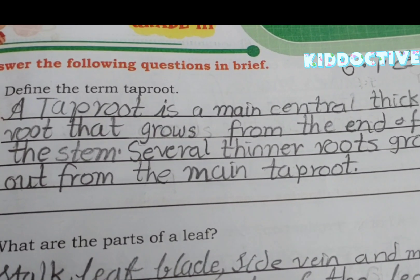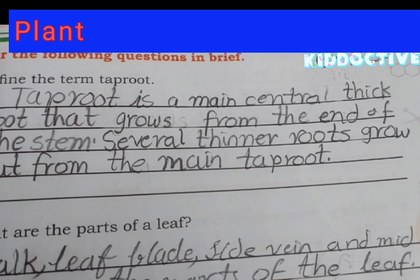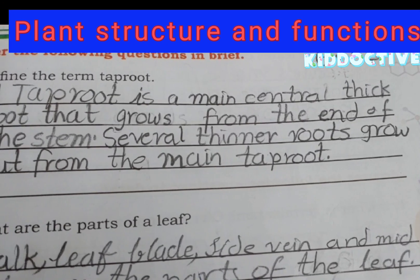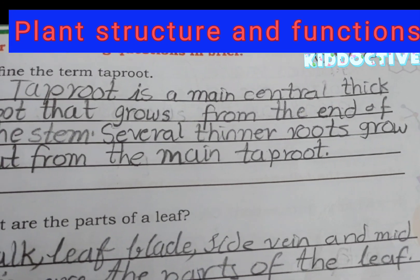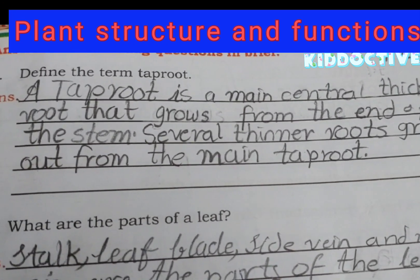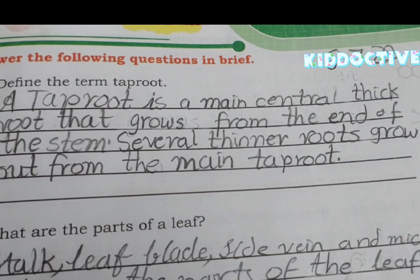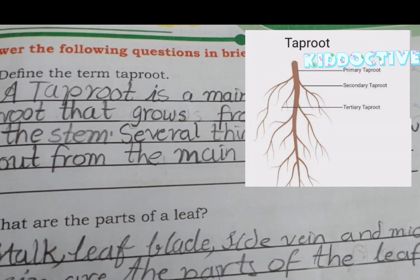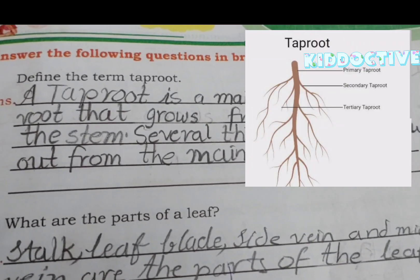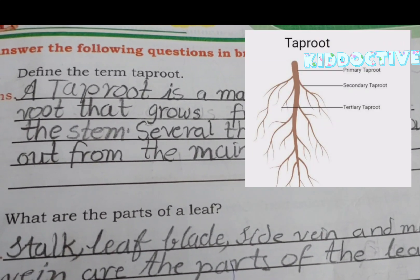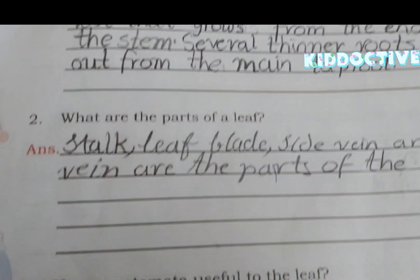Define the term taproot. A taproot is a main central thick root that grows from the end of the stem. Several thinner roots grow out from the main root. That is why it is called a taproot.